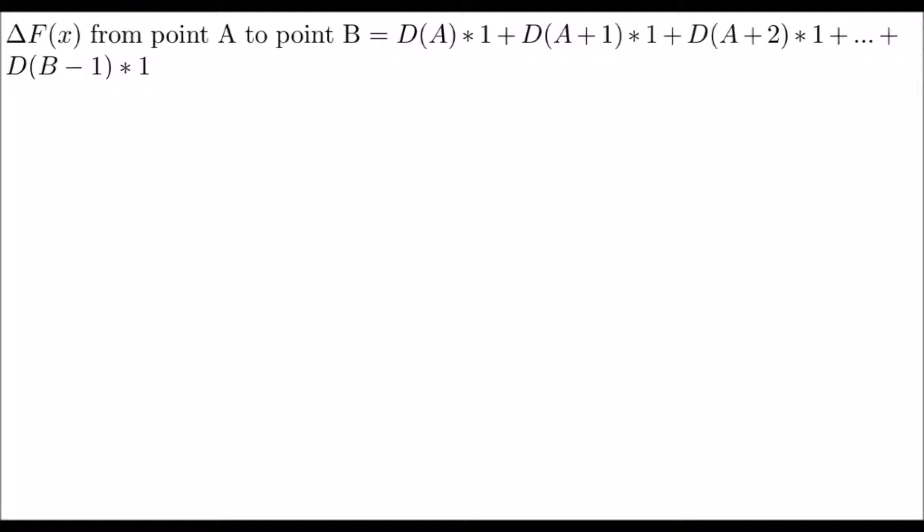Then for length 2, we do the same, so then add the differential at point a plus 1, and multiply by 1. Then for length 3, we do the same, but add the differential at point a plus 2, and multiply by 1. Then, to go all the way to point b, we continue doing this for every term, up to b minus 1.